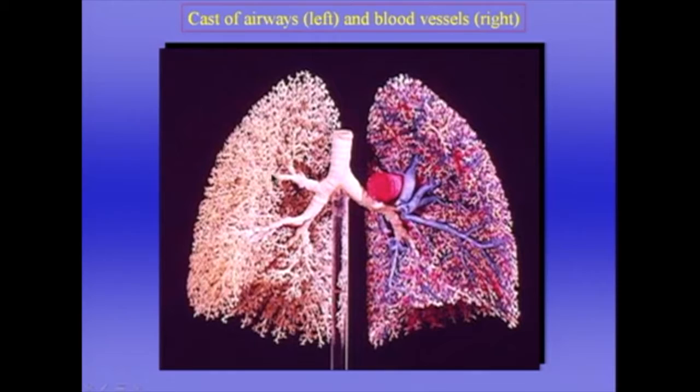Airways branch, as we've seen many times, until you get to the alveoli, and the same is true of the blood vessels. The small pulmonary arteries tend to run alongside the airways until we get down to the respiratory zone.